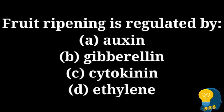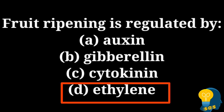The next question is: fruit ripening is regulated by? The options are option A: auxin, option B: gibberellin, option C: cytokinin, and option D: ethylene. The correct answer is option D: ethylene. Ethylene is responsible for the ripening of fruit. Auxin, gibberellin, and cytokinin have other functions, so here ethylene is the correct answer.